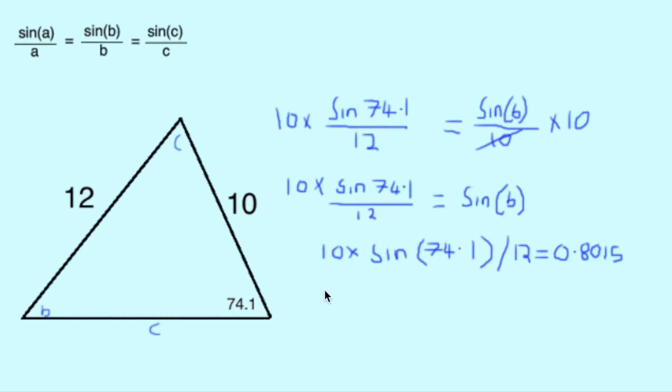To find out what our angle B equals from this, we need to do the inverse sine. So, using our calculator, we do inverse sine 0.8015, which gives us the answer 53.27 when rounded to two decimal places. This means our angle B equals 53.27 degrees.